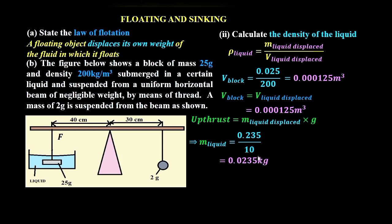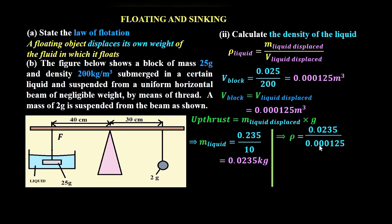With the mass and volume of the liquid displaced, we can determine the density of the liquid: mass over volume = 0.0235 kilograms divided by 0.000125 cubic meters, which gives us 188 kilograms per cubic meter. That is the density of the liquid.